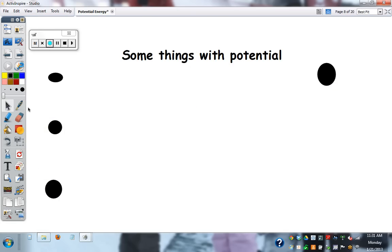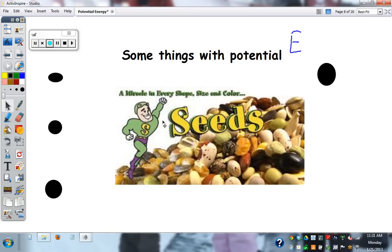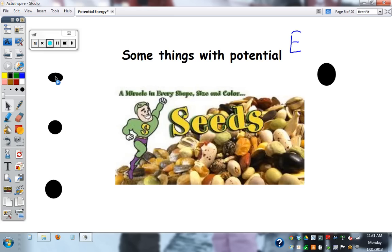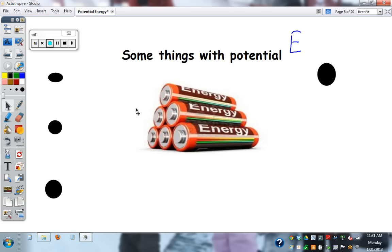And there are also some things with potential energy. This would be some potential energy examples. Seeds have like potential to become a tree, right? There's like some seedness stuff in here, and some vitamins and protein for the plant to do its initial growth. But it's not a tree yet. That's potential. Batteries have potential energy. There's nothing happening, but if you put a battery in a toy, you can turn on the toy. But a battery in itself has potential, it's just not doing anything yet.